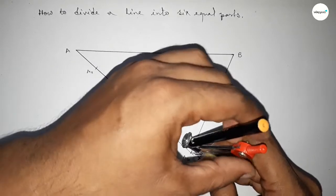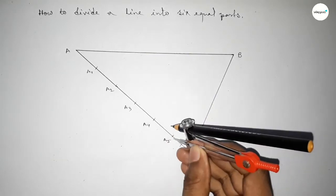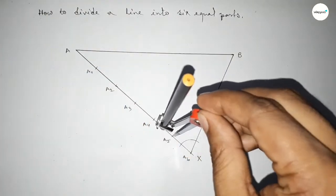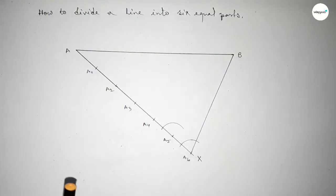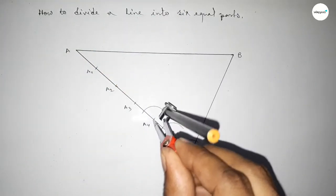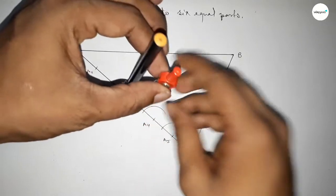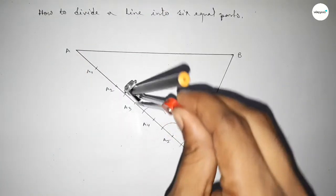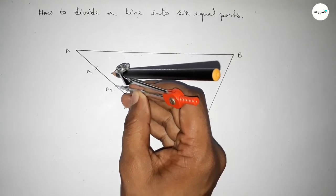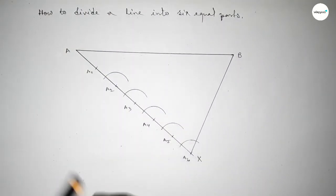Putting the compass on point A6 and taking any length, drawing an arc this way. With the same length, putting the compass on point A5 and drawing an arc similarly. Then drawing arcs on points A4, A3, A2, and A1 in the same way, keeping the same compass length throughout.